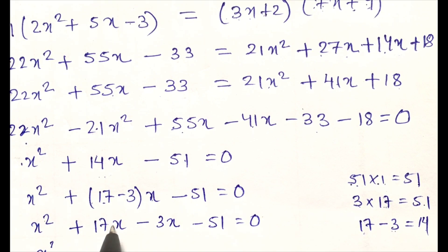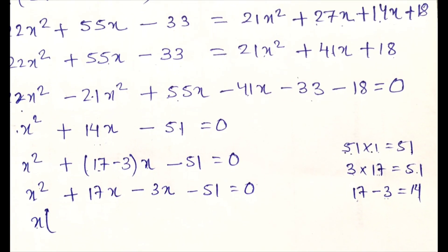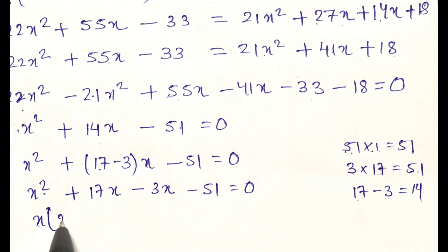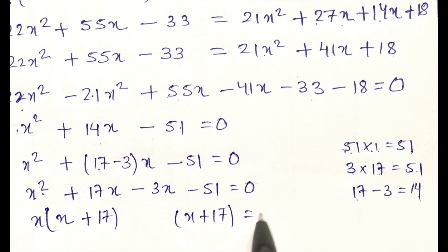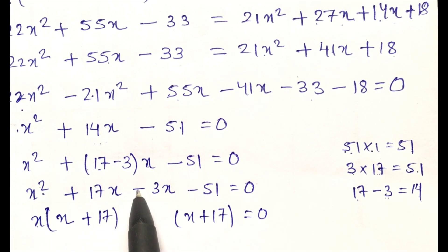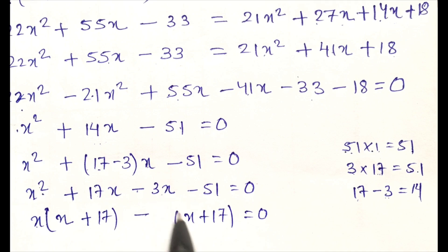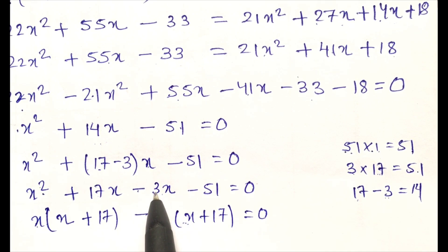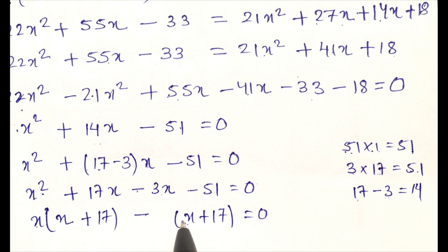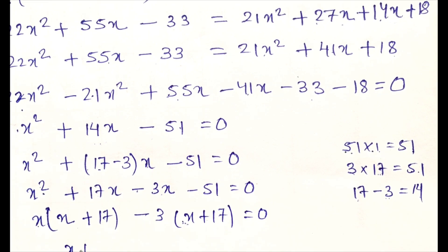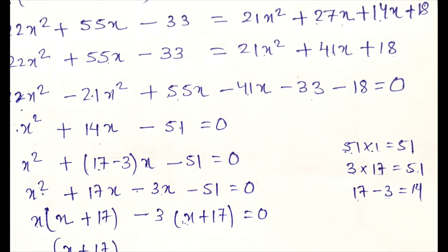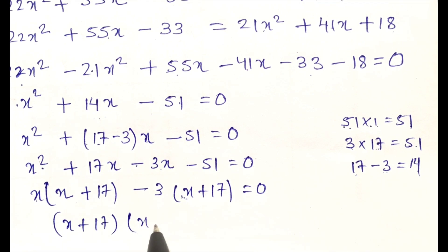Now take common from the first two terms: x comes out as common, giving x(x + 17). Then from the last two terms, 3 comes out as common, giving -3(x + 17). So the equation becomes (x + 17)(x - 3) = 0.